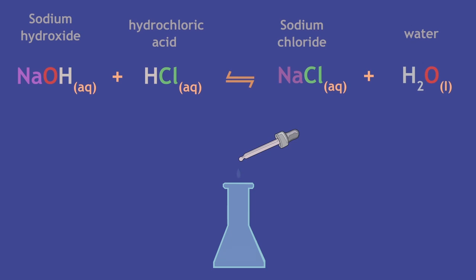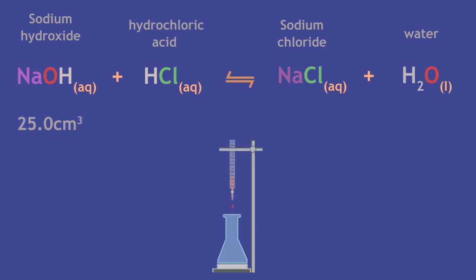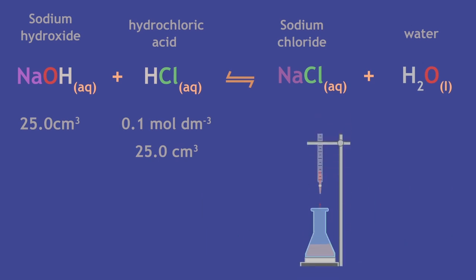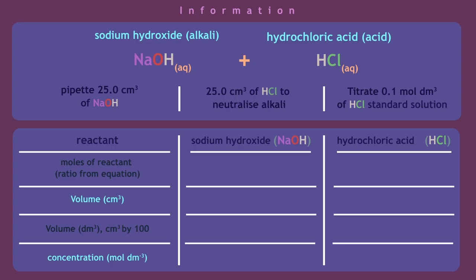Consider this example of neutralization. You pipette 25 cm³ of a sodium hydroxide solution into a conical flask and titrate it with a standard solution of 0.1 molar hydrochloric acid using a suitable indicator. You find that 25 cm³ of the acid was required to neutralize the alkali — this is the end point of the titration. You can now calculate the concentration of the sodium hydroxide in moles per dm³.